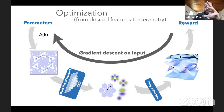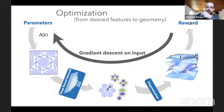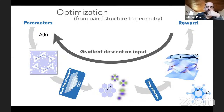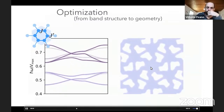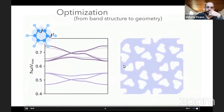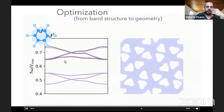The idea is: once the neural network is trained with fixed weights and biases, I define a reward based on a desired feature — in the simplest case, reproducing a specific band structure — and then perform gradient descent in the input space, i.e., in the shape of the potential. Starting from a random potential, I can find the geometry that gives the desired band structure.